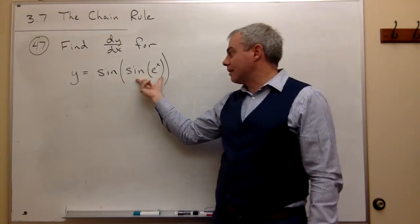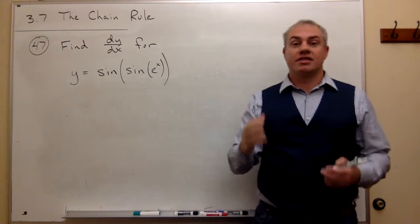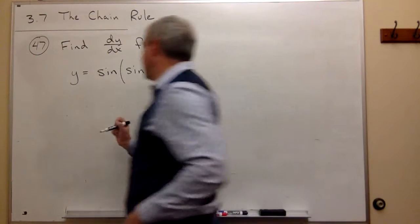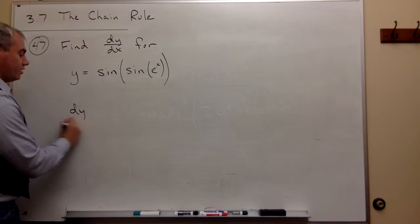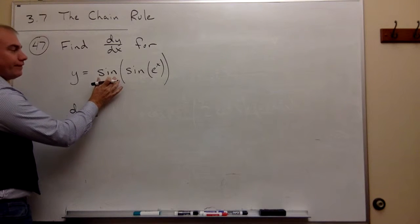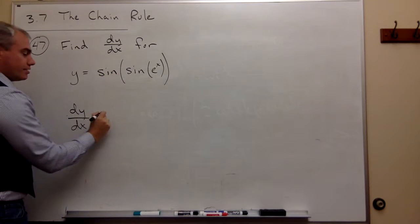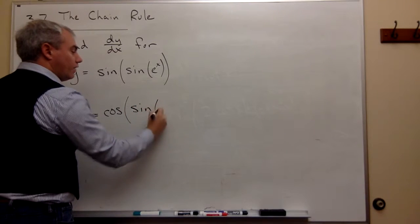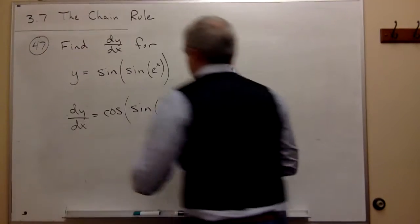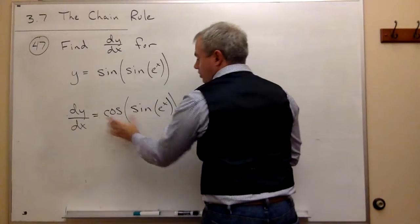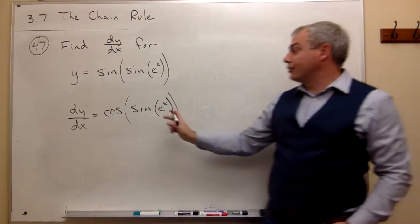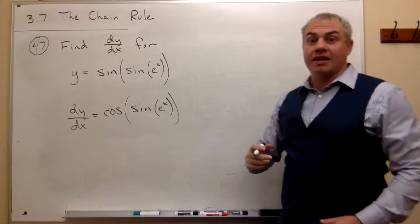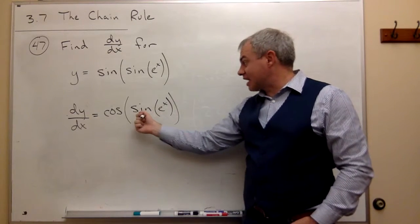So I've got sine of something, and I need to take the derivative of sine of something. The derivative of sine of something is cosine of that something. So dy/dx is equal to cosine of that something, and the something in this case is sine of e to the x. Now we need to multiply by the derivative of what was inside — and what was inside is sine of e to the x.